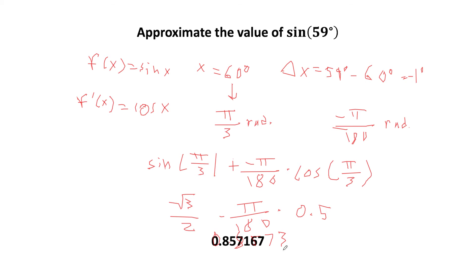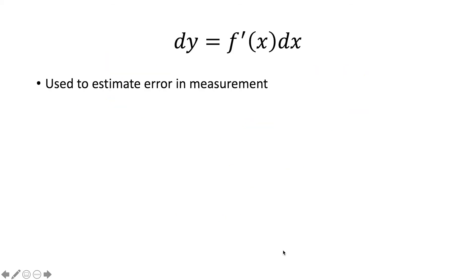Now let's move on to a slightly different topic. We have the equation dy = f'(x)·dx, which is used to estimate the error in measurement. The derivation is straightforward: since dy/dx = f'(x), we simply multiply both sides by dx to get our equation.